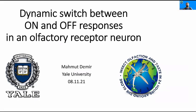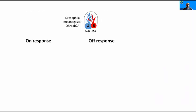Thank you, Karen. Hi everyone, this is Mahmoud Demir, I'm at the University. Today I'm going to talk about the novel phenomena we have discovered in the olfactory system. Olfactory receptor neurons in Drosophila melanogaster can respond to odorants in two distinct ways: on responses and off responses.